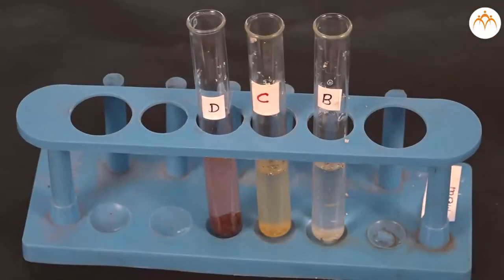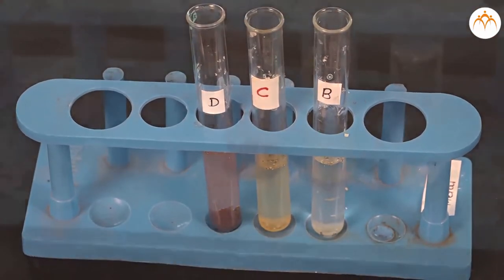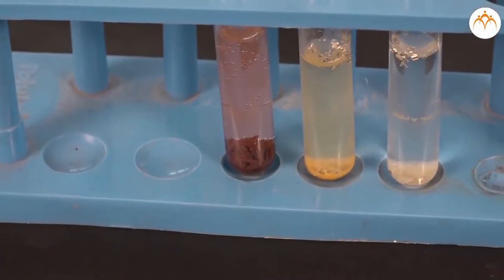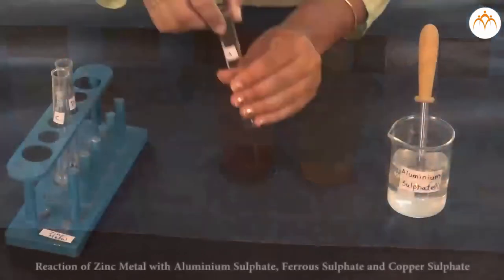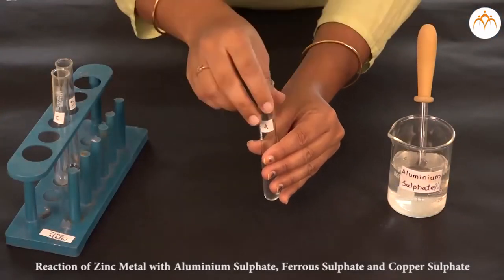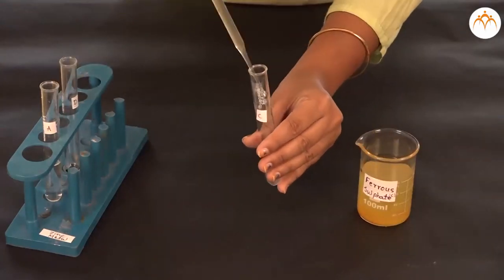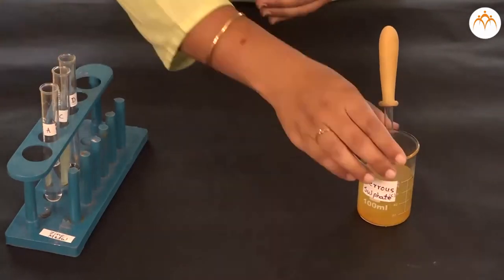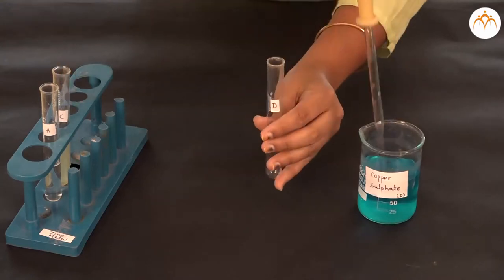Part B. Now let us add zinc metal to aluminum sulfate, ferrous sulfate and copper sulfate solutions. Observe the changes.